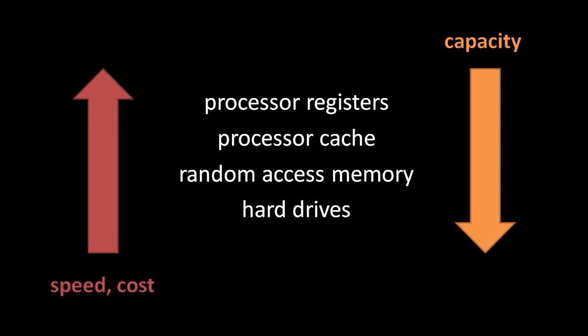The unique thing about processor caches is that programmers typically have little to no direct control over them. Instead, the content of the cache is managed by the hardware transparently to the programmer. When your code reads an address of system memory, the CPU first checks if an up-to-date copy of that byte currently sits in the cache. If so, the CPU can read the byte directly from the cache without reading from slower system memory. If an up-to-date copy does not already sit in the cache, the byte is copied from memory to the cache before it is read, such that it might still be there the next time the CPU wants to read that address. Because the cache is much smaller than system memory, only copies of small parts of system memory can fit in the cache at any moment, so when data from a memory address is copied to the cache, a copy of some other memory address must get overwritten.